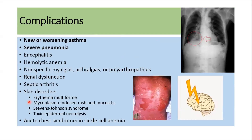Complications can affect the respiratory system or other systems. Respiratory complications include worsening asthma, severe pneumonia, and in patients with sickle cell anemia, acute chest syndrome. Other complications include encephalitis, hemolytic anemia, polyarthropathy, renal dysfunction, septic arthritis, and skin disorders such as erythema multiforme, Mycoplasma-induced rash or mucositis, Stevens-Johnson syndrome, and toxic epidermal necrolysis.